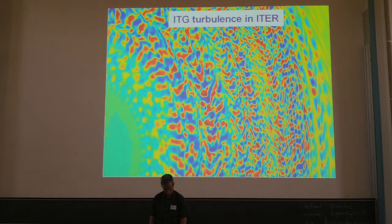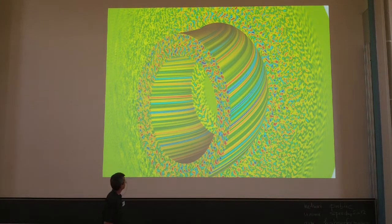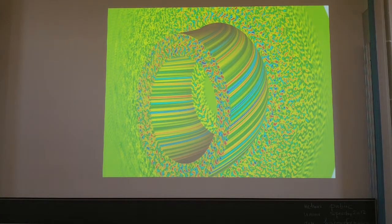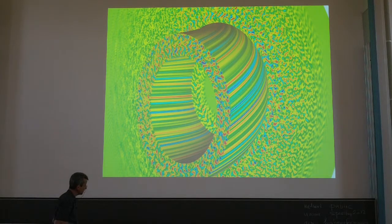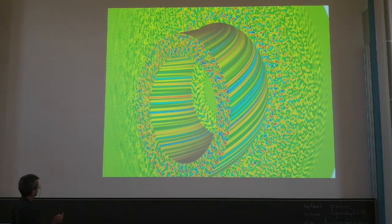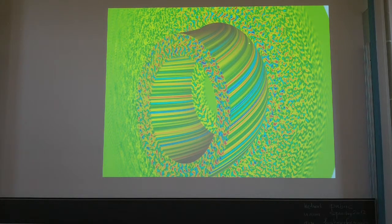Here are the results — ITG turbulence in ITER. This is a cross-section of turbulence: the background is a cross-section of the plasma, and shown here is a particular magnetic surface in ITER, with contours of the perturbed density due to turbulence. The hot plasma is in the core and the cold plasma is in the periphery. You see quite small scales here comparable to the Larmor radius scale, while on the magnetic surface the perturbations are extremely elongated — we have an aspect ratio of about 1000.